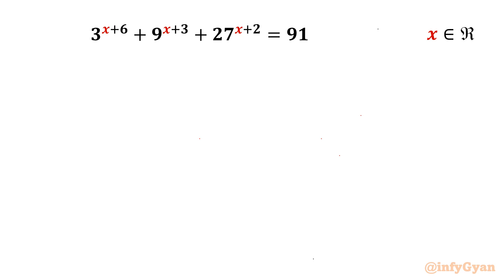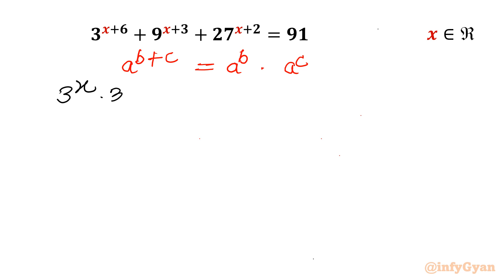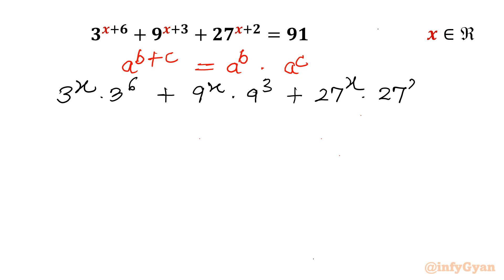Let's get started by writing one powerful exponent property: a^(b+c) = a^b · a^c. Let's apply this property to our equation. So I can write 3^x · 3^6 + 9^x · 9^3 + 27^x · 27^2, and the right hand side is 91 unchanged.